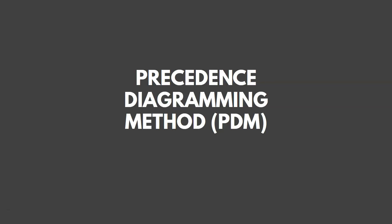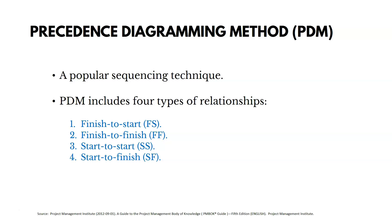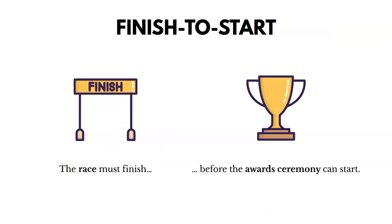The precedence diagramming method is a way to sequence our activities. There are four different relationships talked about with PDM: finish-to-start, finish-to-finish, start-to-start, and start-to-finish. Finish-to-start: a race must finish before the award ceremony can start. We can't start the award ceremony before the race finishes — this is a finish-to-start relationship.